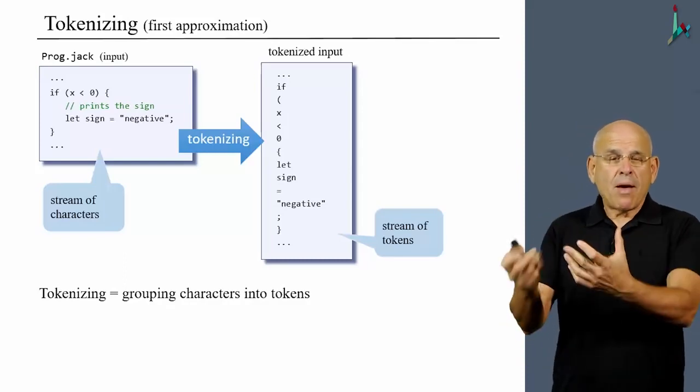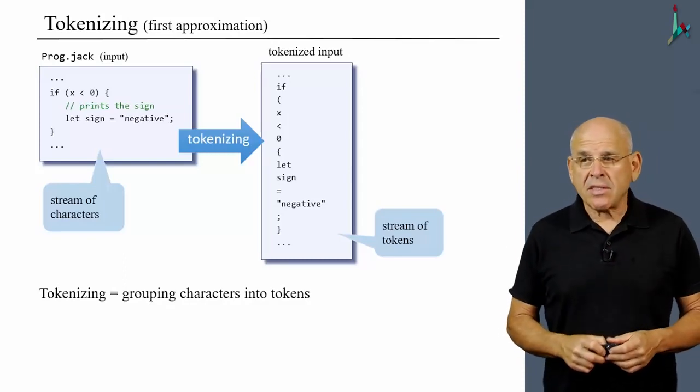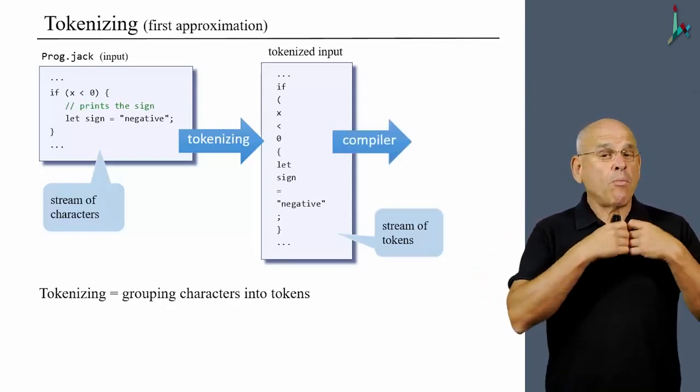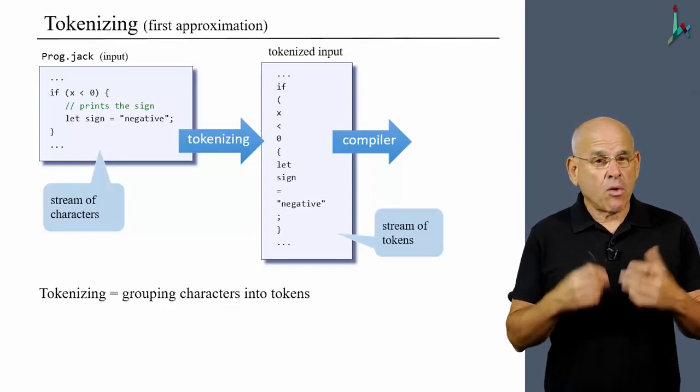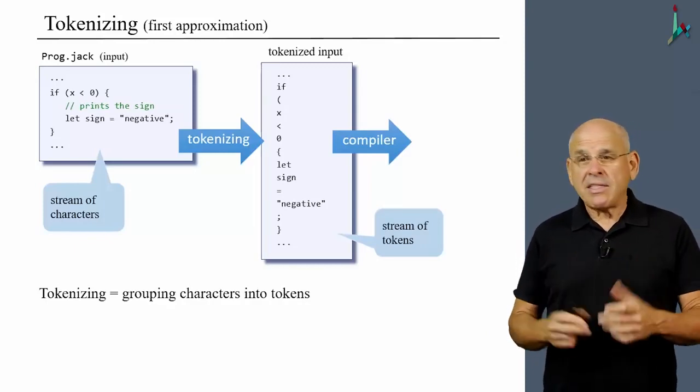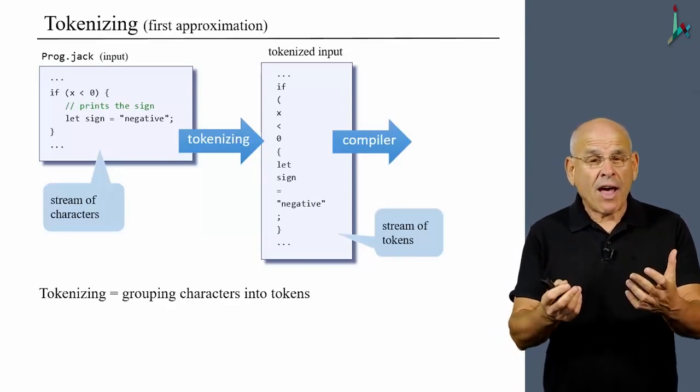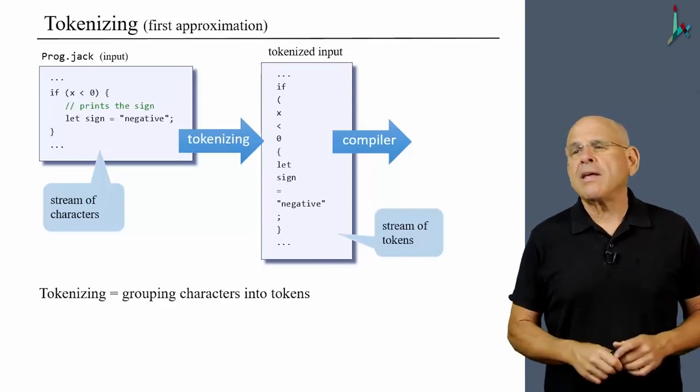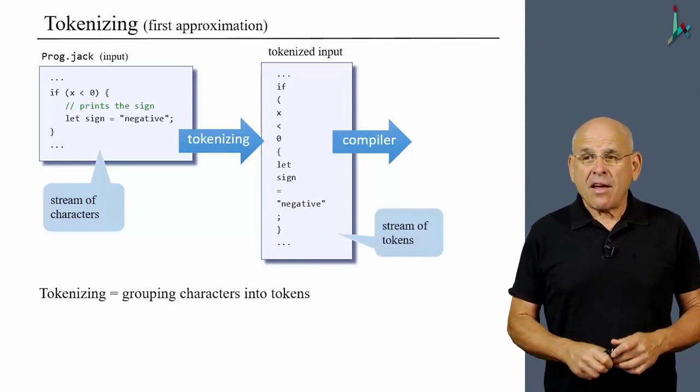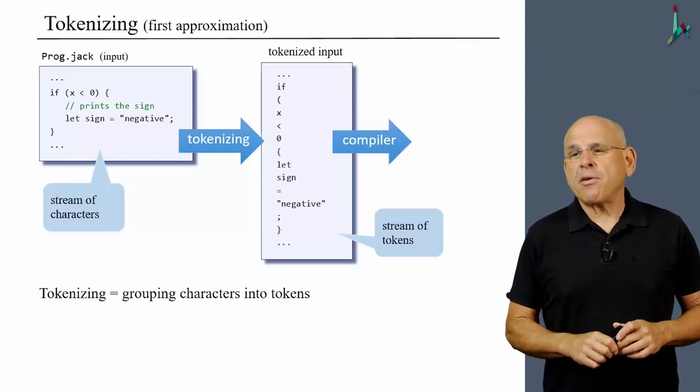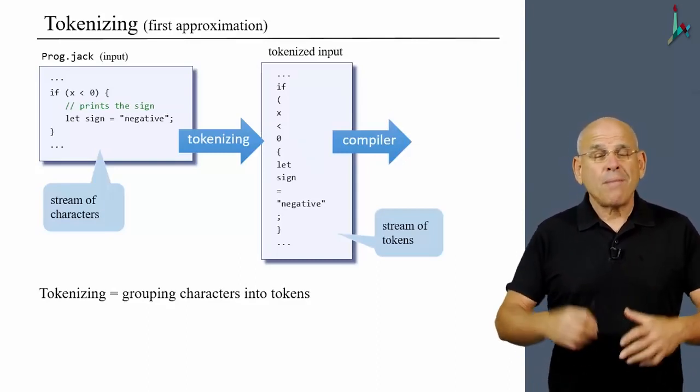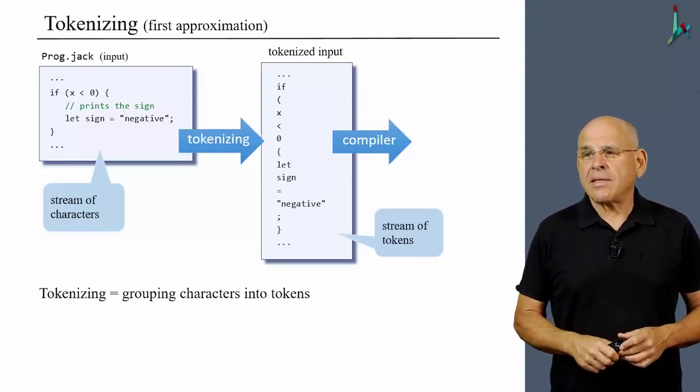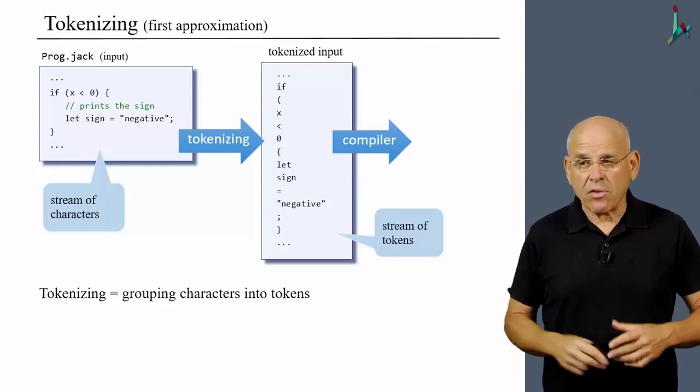Once we come up with this stream of tokens, we can hand it over to the compiler. And from this point onward, we can completely forget about the original input file, which is very nice indeed. Because the original input file contains all sorts of noise, things like whitespace and comments which are completely irrelevant for the compiler. Therefore, the tokenizing performs a very simple yet important preliminary processing of the file that makes compilation something that can start on the right foot.